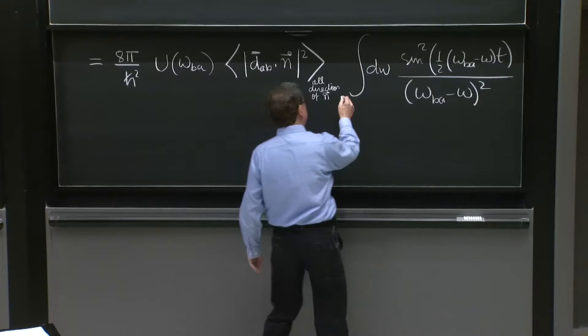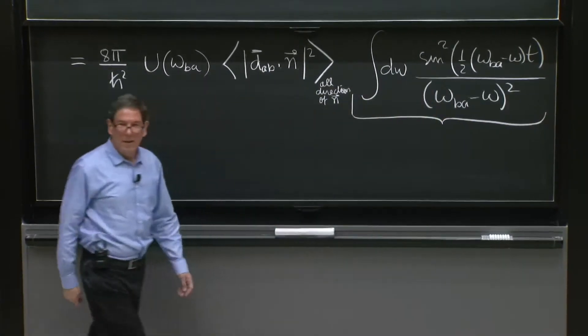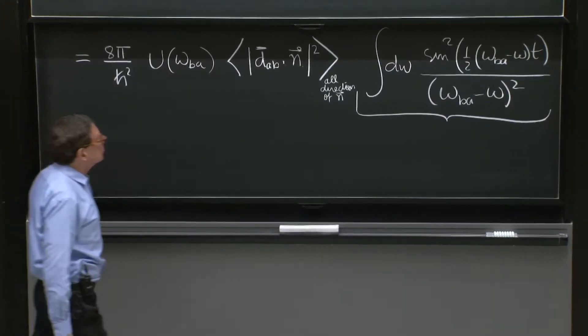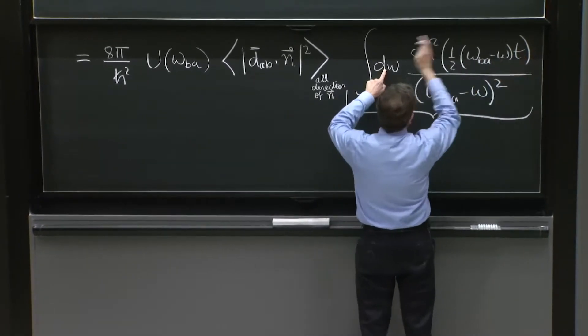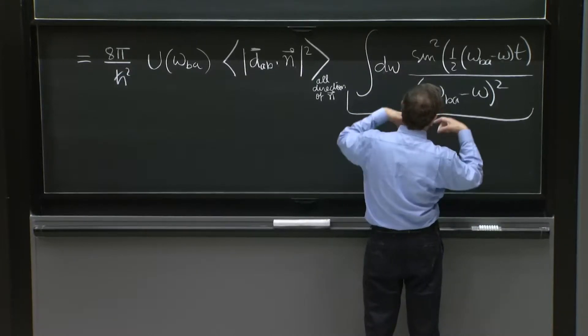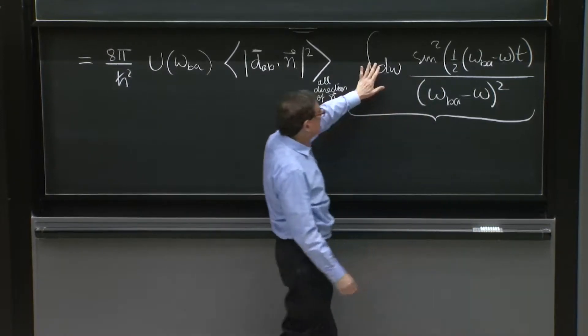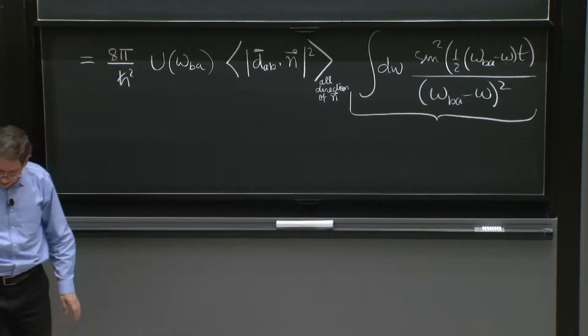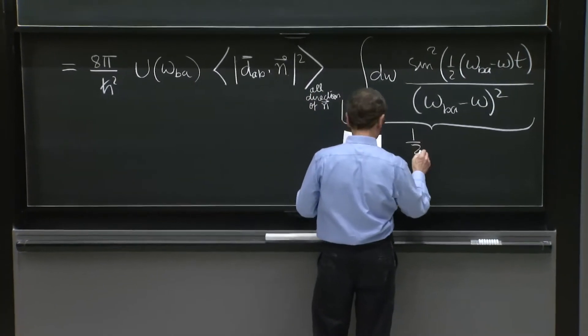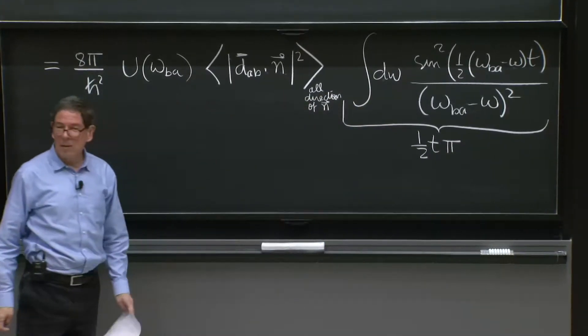One thing that I don't think we need to do explicitly again is this integral. We've done it a couple of times. You do a change of variables. The t will go out linearly. And this becomes an integral of sine squared over x squared, which is equal to π. And so this integral has been done a couple of times. Let me just write the answer to this thing. It's 1 half t times π. It's linear in t. That we've observed.